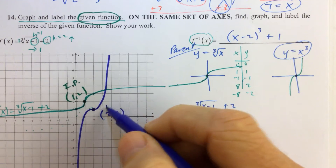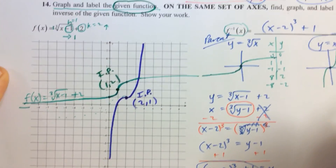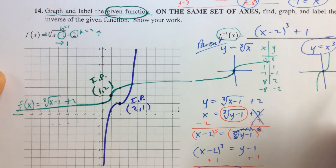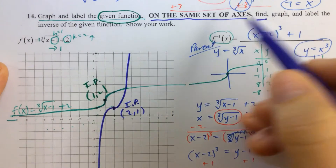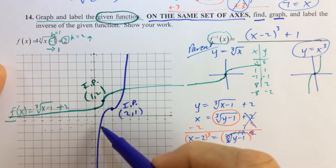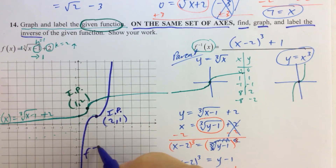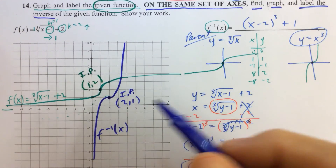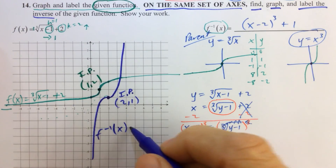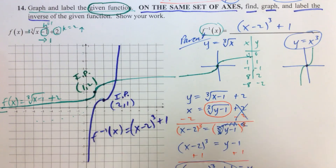That is a really neat problem that brings together a lot of things we've talked about all year as well as throughout unit 4. On the same set of axes we found, graphed, and labeled the inverse. Don't forget to label the inverse of the given function — label it f inverse. Make sure you label both graphs, and that's it.